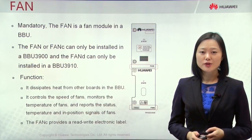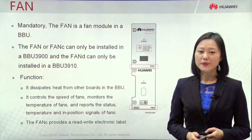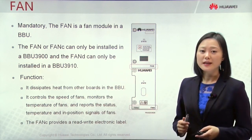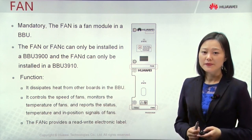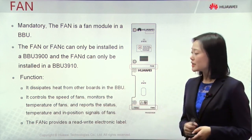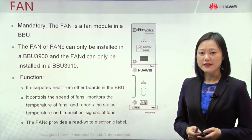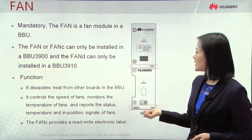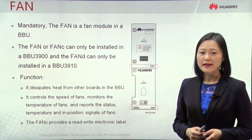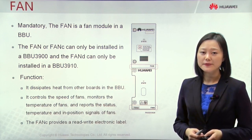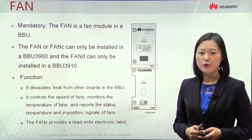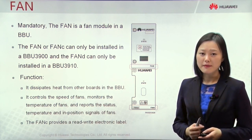Now let's continue introducing the modules inside the BBU. The fan module is mandatory and installed in Slot 16. There are three types of fan: the original Fan A, the Fan C, and the newest Fan D. Fan D can be supported in BBU-3910 and offers better performance — its maximum rotation speed can reach 9,000 RPM.